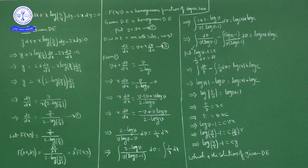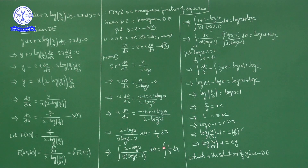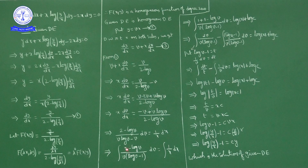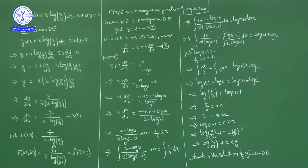Integrating on both sides: integral of (2 minus log v) upon v(log v minus 1) dv equals integral of (1/x) dx. The right-hand side gives log|x| plus log c. For the left side, we write 2 minus log v as 1 plus (1 minus log v) in the numerator.